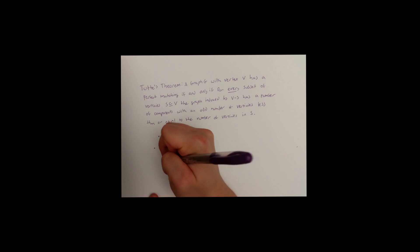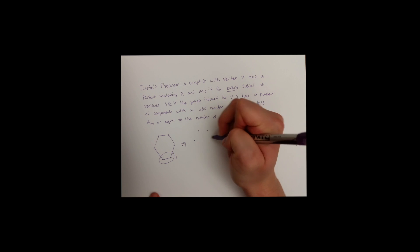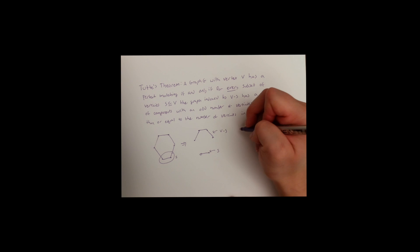Let's take this hexagon, for example, which we've already shown has a perfect matching. We circle the bottom two vertices, name them S, and then the top four is a component named V minus S. We can clearly see that the component has four vertices, which is an even number. So there are zero components with an odd number of vertices, since four is even.